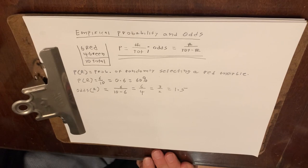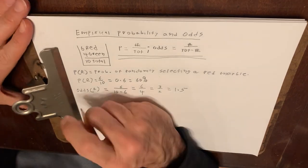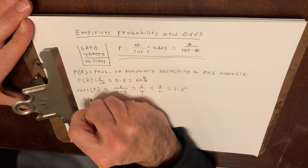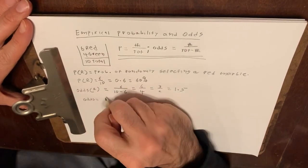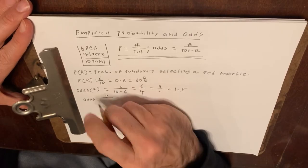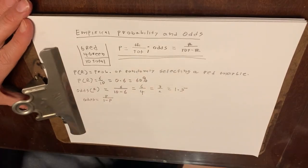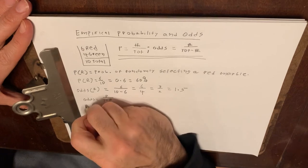The last formula I want to give you is an algebraic relationship between probability and odds. So odds can also be defined as the probability divided by one minus the probability. And let's do an example of this.